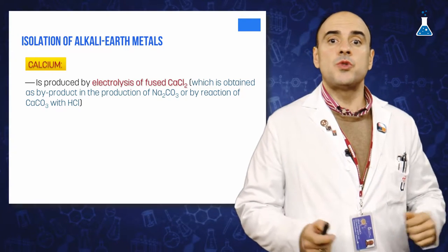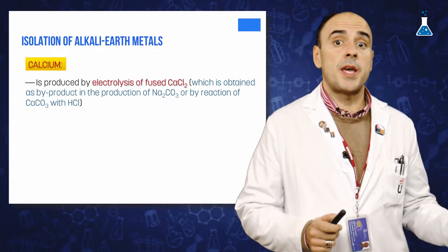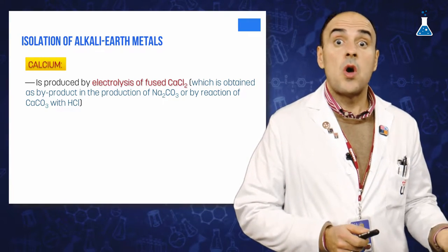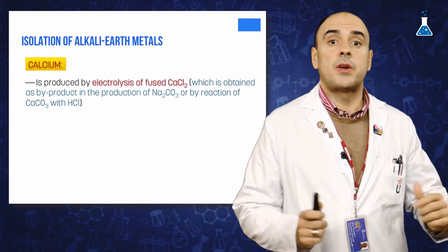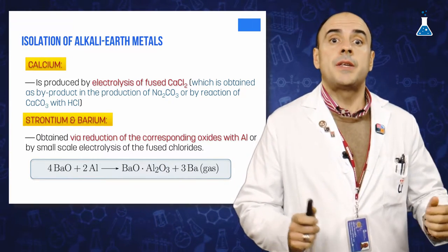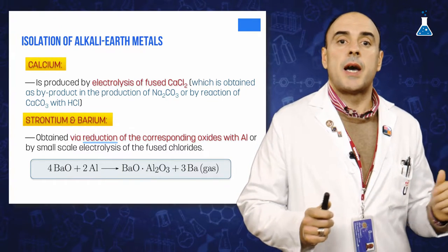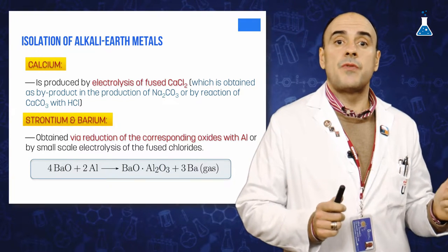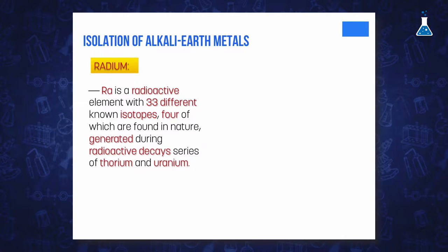Calcium is produced by electrolysis of fused calcium dichloride, which is obtained as a by-product in the production of sodium carbonate, or by reaction of calcium carbonate with hydrogen chloride. Strontium and barium are extracted by reduction of the corresponding oxide by aluminum, or by small-scale electrolysis of the fused chlorides.